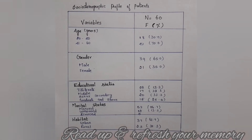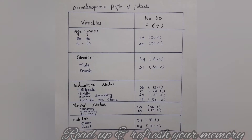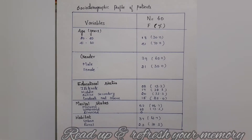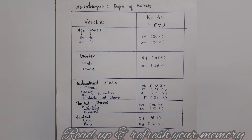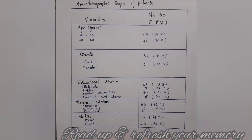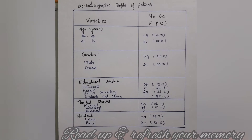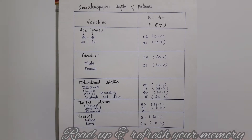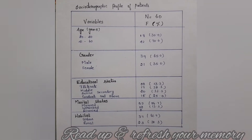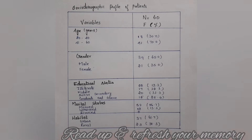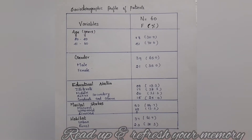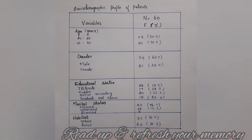Following is an example of a frequency distribution table. The example given shows the demographic profile of the patient, grouped into age, gender, education status, marital status, and habitude.